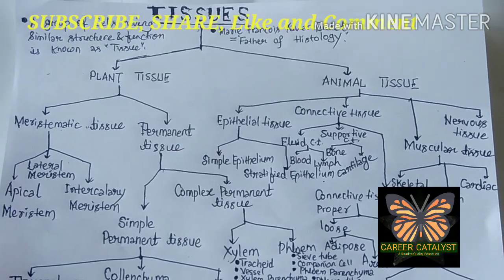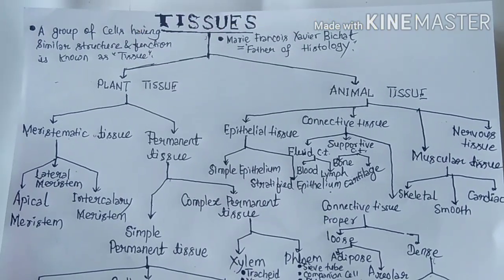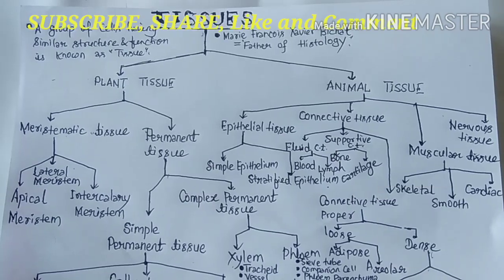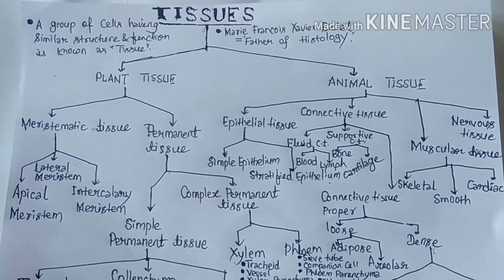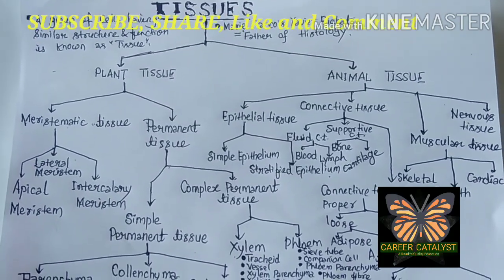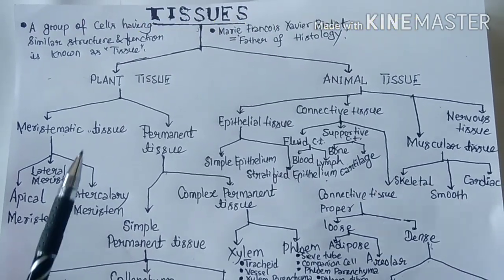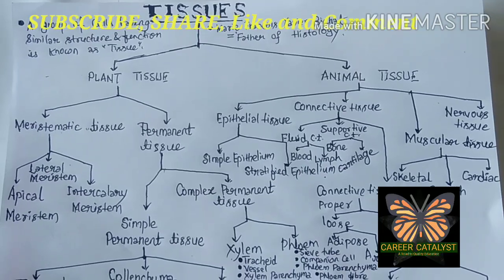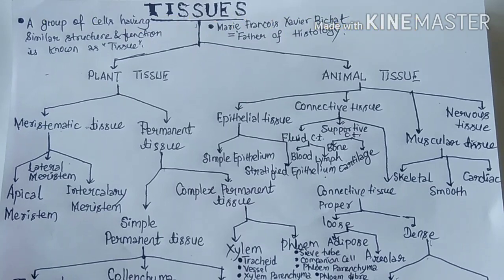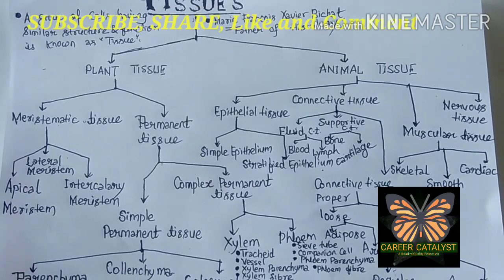Tissue can also be defined as: a group of organized cells which are similar in structure and origin, but their structures may be similar or dissimilar also. So when we are talking about the definition of tissue, a simple definition is: a group of cells having similar structure and function is called tissue.